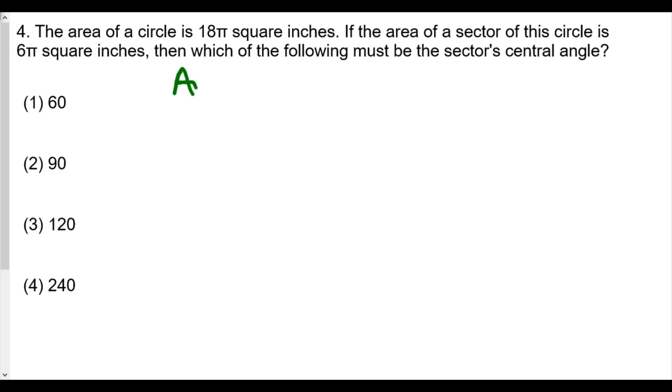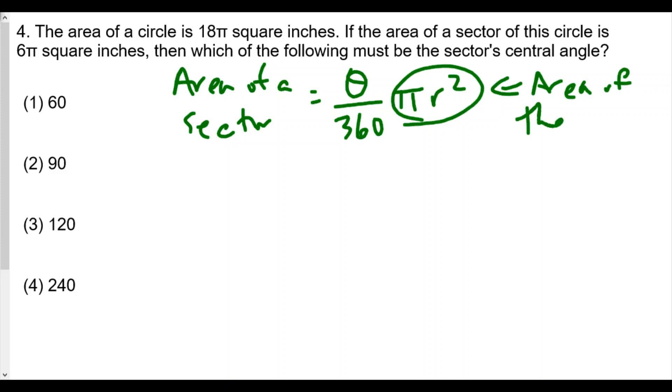So remember we find the area of the sector: area of the sector is equal to theta, the measure of the central angle, over 360 degrees, times π times r squared. And so the πr² is the area of the circle, the full area of the circle.